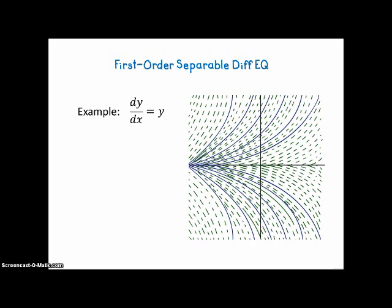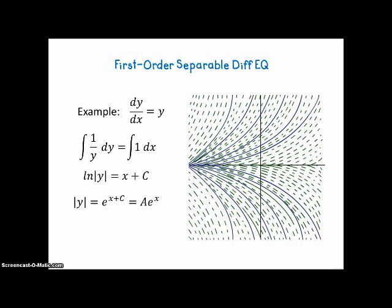How would we solve this? This is called separable because we're able to rearrange it by separating the y's and the x's on opposite sides of the equation. Then we integrate both sides, and we end up with the natural log of the absolute value of y equaling x plus c — we only need a constant on one side because the two constants can be combined. We apply the anti-log to both sides, and we can rewrite e to the x plus c as e to the x times e to the c, and rename e to the c as a. If we remove the absolute values, we can put a plus or minus, but we don't really need the plus or minus because a could be negative.